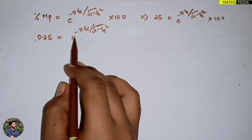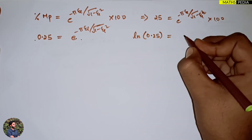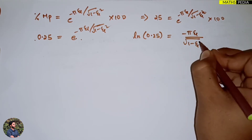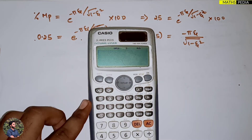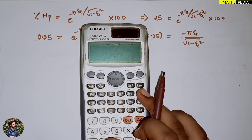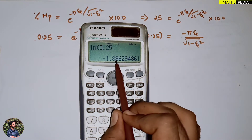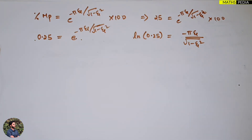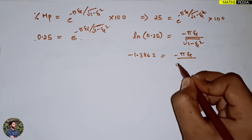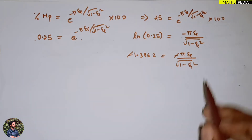Taking the natural log of both sides to eliminate the exponential: ln(0.25) = −πζ/√(1−ζ²). Using a calculator, ln(0.25) equals −1.3862, so we have −1.3862 = −πζ/√(1−ζ²).